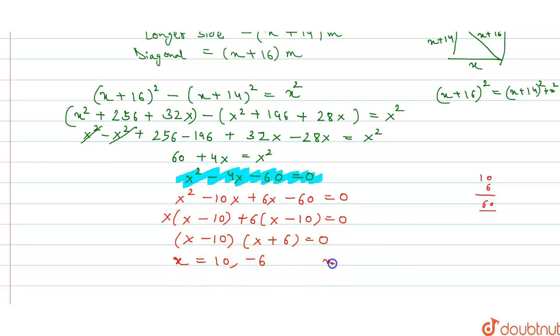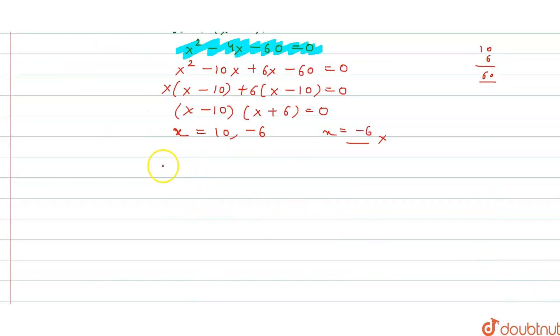So what are our answers? x equals to 10 and minus 6, right? Length or breadth cannot be negative, so breadth is equals to 10 meters. And length will be 10 plus 14, which we took as x plus 14, right? So 10 plus 14 equals to 24 meters. So this is the required answer.